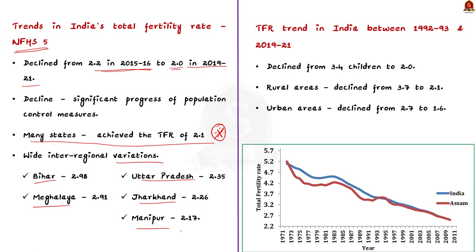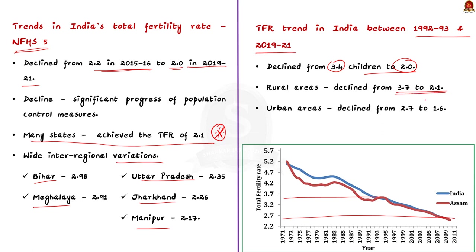The total fertility rate trend in India between 1992 and 2021 declined from 3.4 to 2.0 respectively. Total fertility rate among women in rural areas declined from 3.7 to 2.1, while the corresponding decline among women in urban areas was from 2.7 to 1.6.